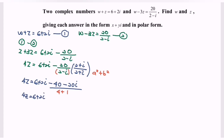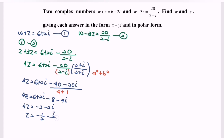So 4z equals 6 plus 2i minus 40 over 5 minus 20i over 5, which gives minus 8 minus 4i. Collecting real parts: 6 minus 8 equals negative 2; imaginary parts: 2 minus 4 equals negative 2. Therefore z equals negative 1 over 2 minus i over 2.